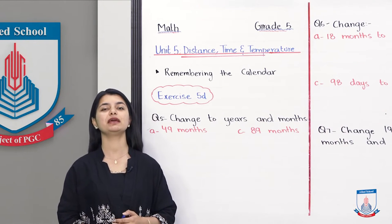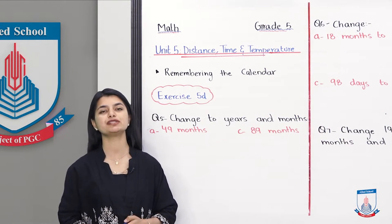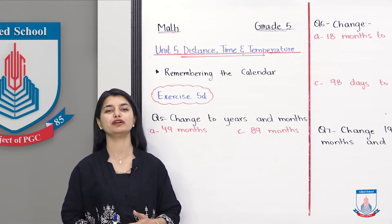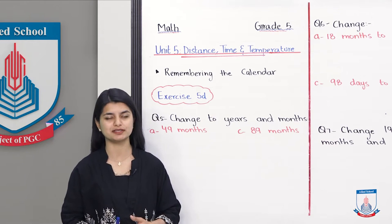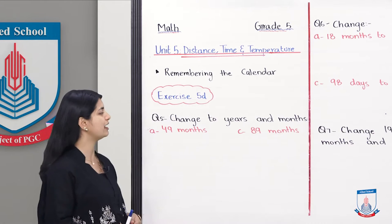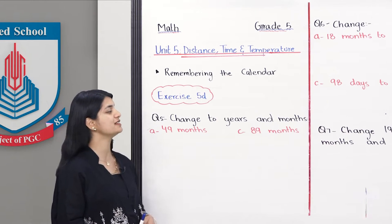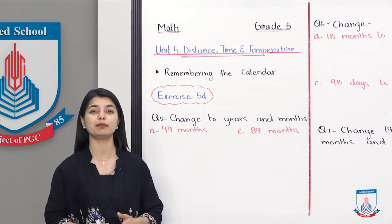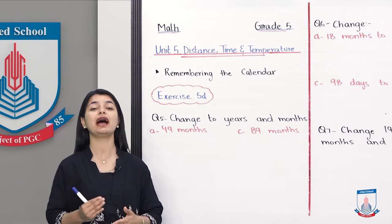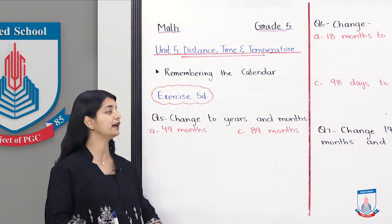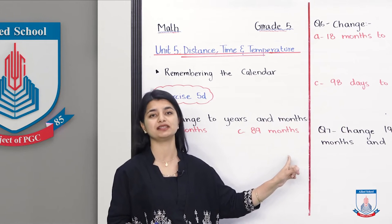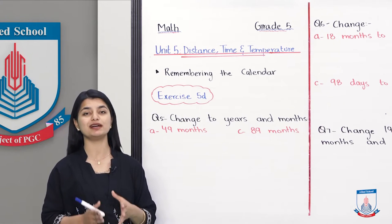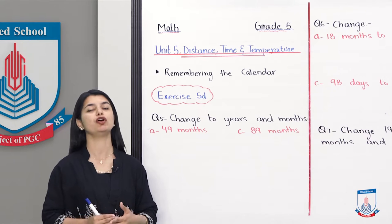Exercise 5D. We have covered 4 questions in the last lecture. Today we have to focus on question number 5. The task is to change measurements to Years and Months — they have given you values in different units of Days and Months, and you have to convert them into Years and Months. We will discuss two parts; the rest of the parts you will do yourself using the same methodology.